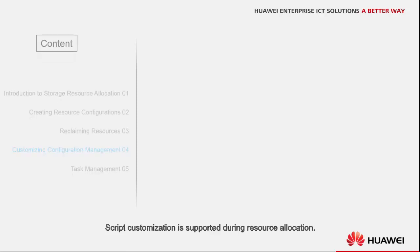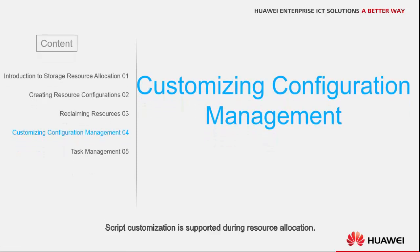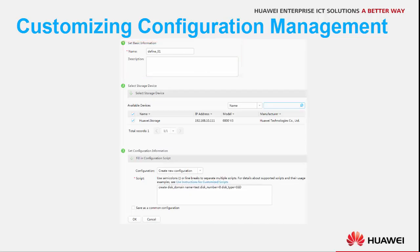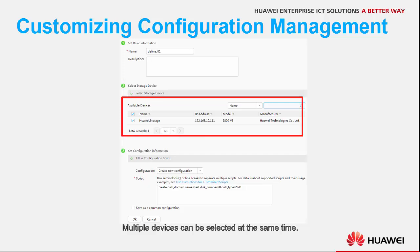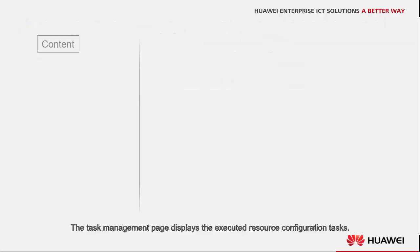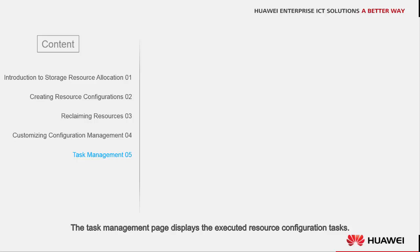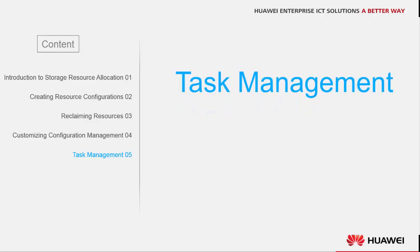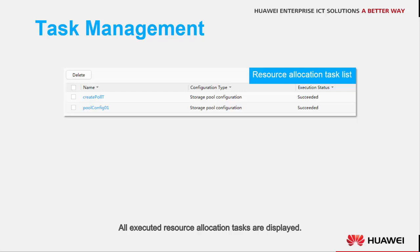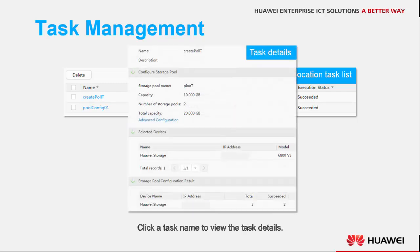Script customization is supported during resource allocation, allowing you to flexibly configure resources on storage devices. Set the name and description to identify the task, and multiple devices can be selected at the same time. Customize command scripts as required. The task management page displays the executed resource configuration tasks, helping you better understand the task execution status. All executed resource allocation tasks are displayed, and you can click a task name to view the task details.